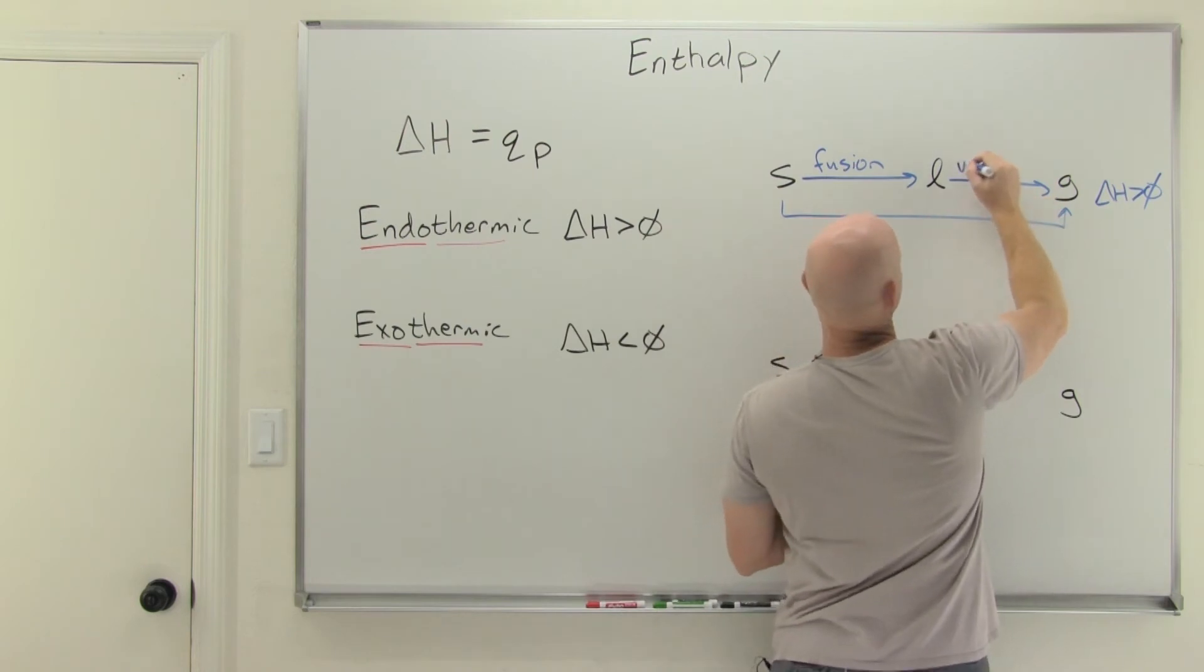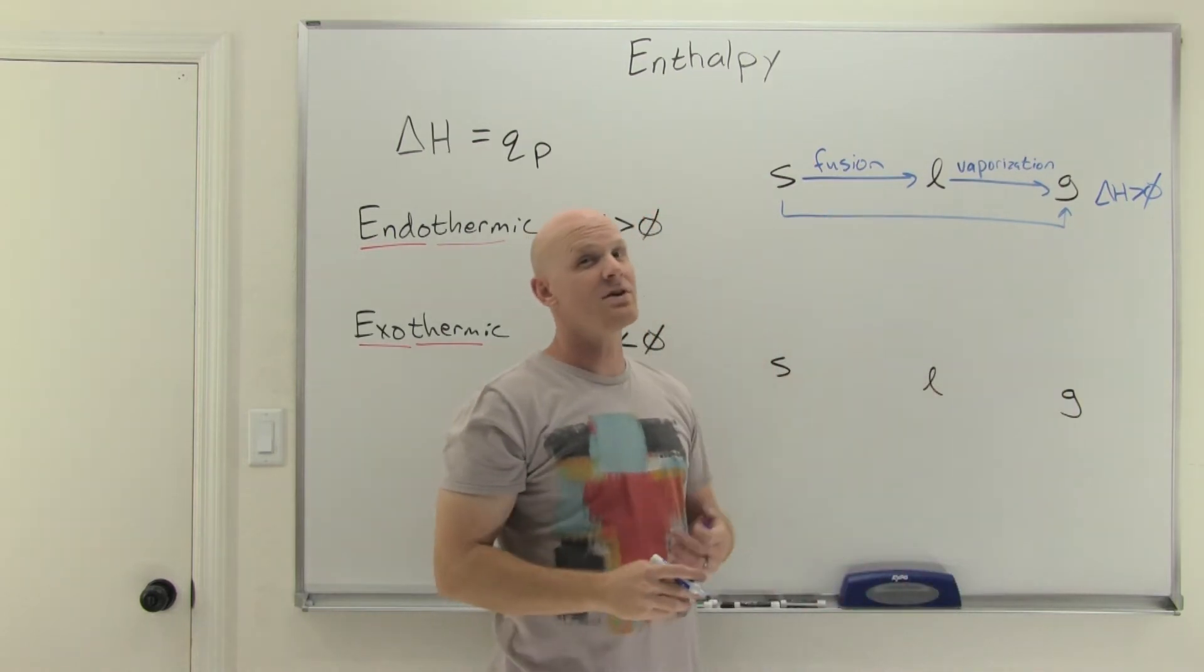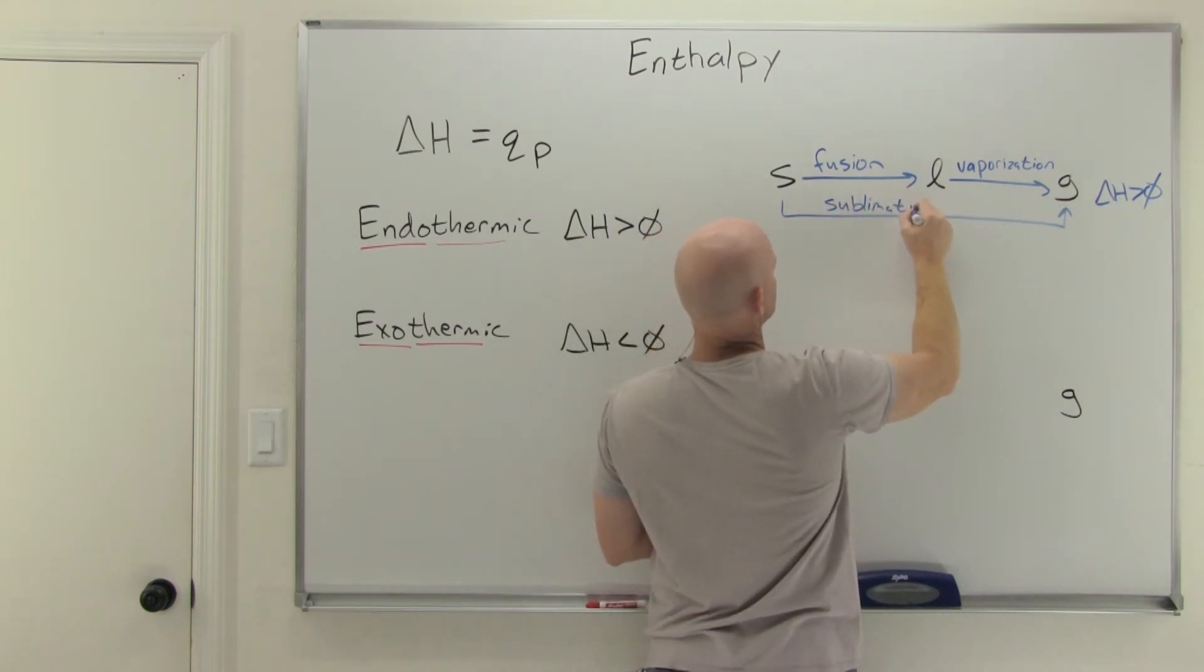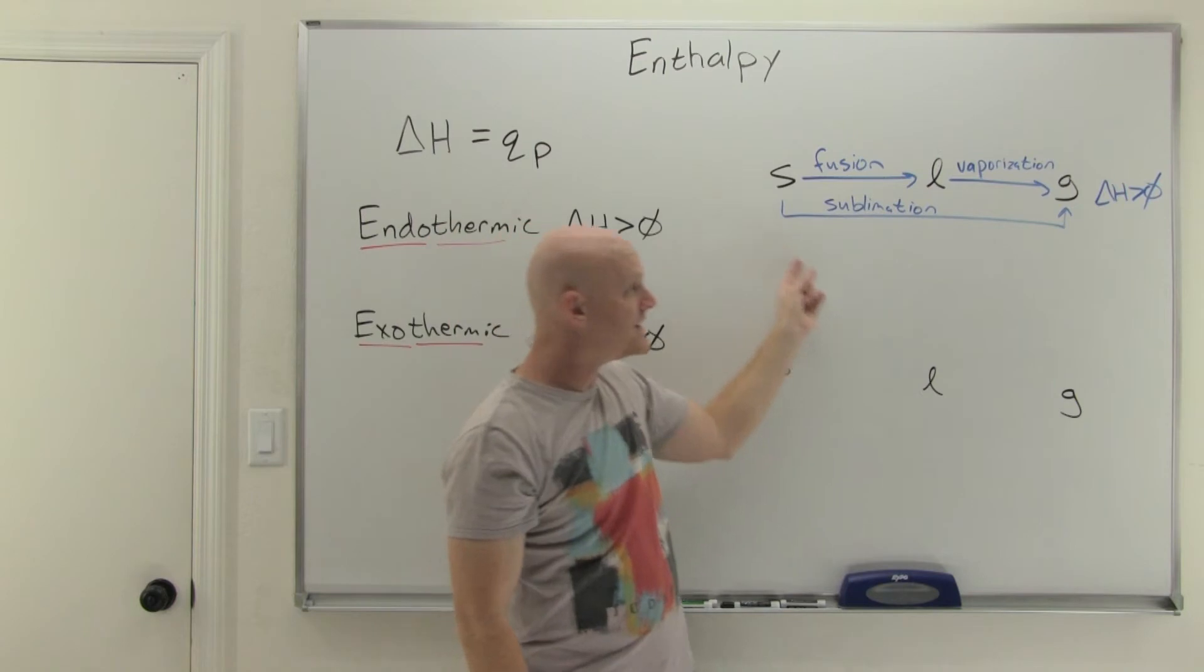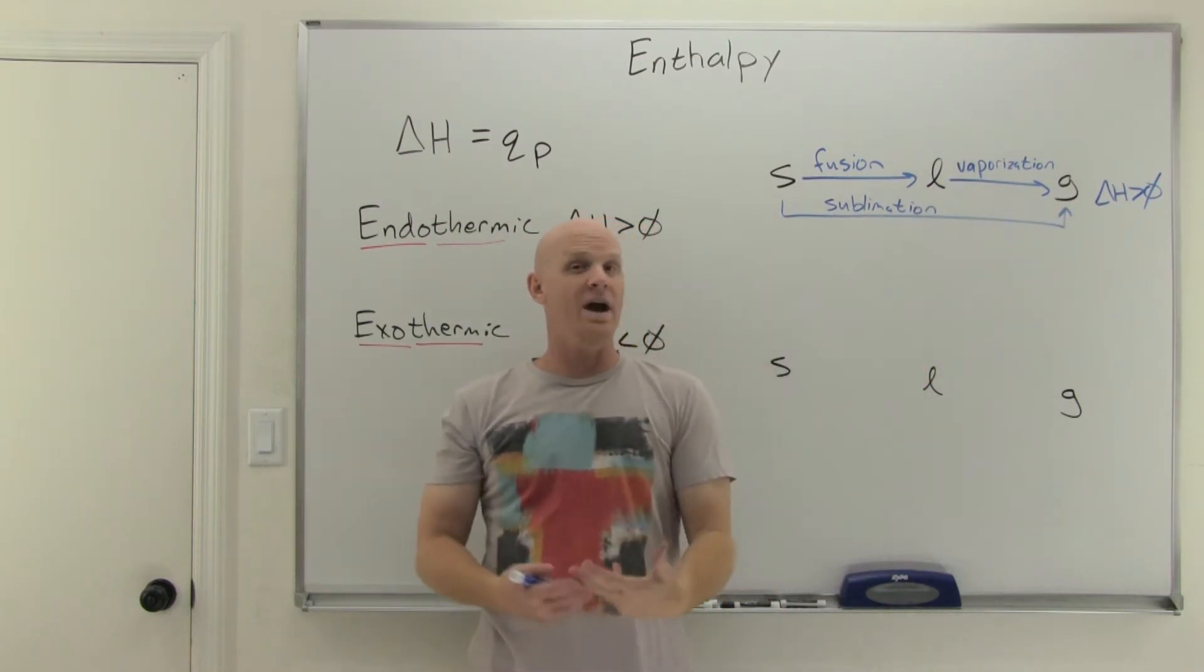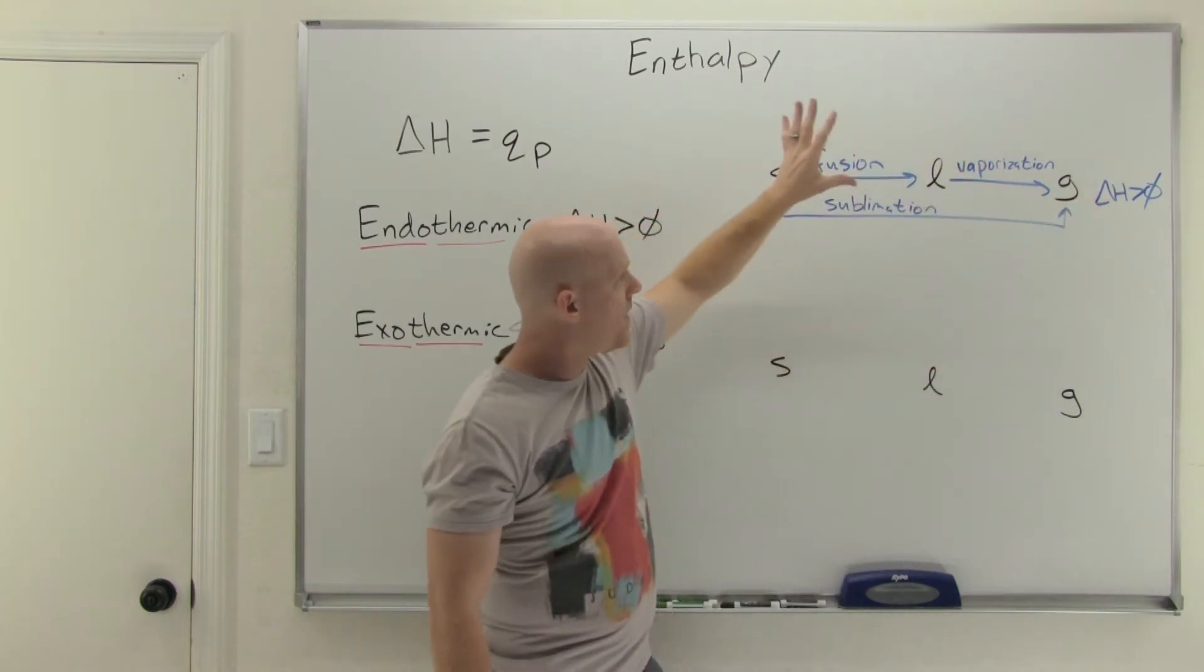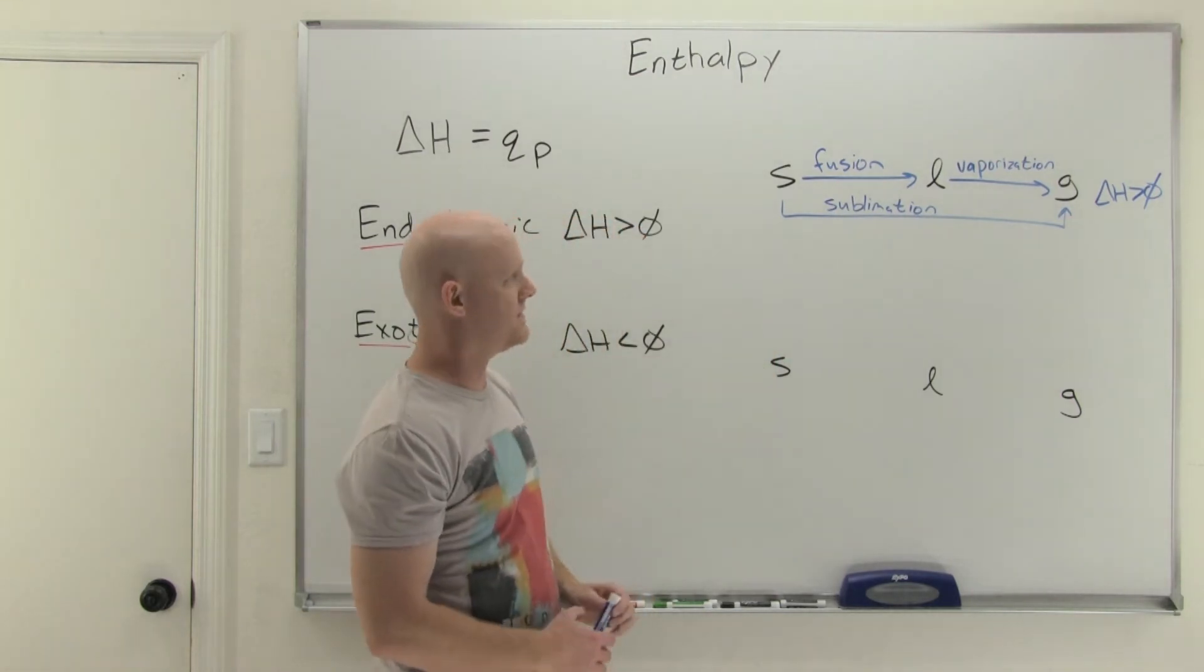Same thing with liquid to gas, that's boiling, but we often refer to that as vaporization. We still use the word boiling, but vaporization is kind of a formal term for it. Finally, from solid to gas, that is called sublimation, one you don't come across very often. This is what dry ice does. Dry ice goes straight from solid carbon dioxide to gaseous carbon dioxide. It never passes through the liquid phase, which is why it never feels wet, hence the name dry ice. The process of sublimation also requires heat and delta H is positive. All three of these processes are endothermic. They all require heat.